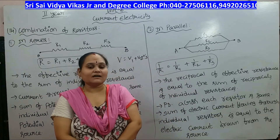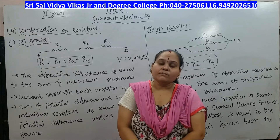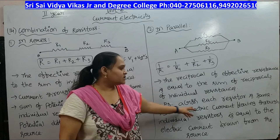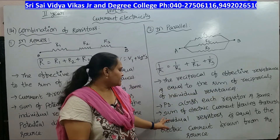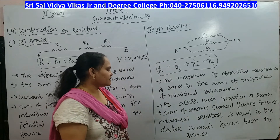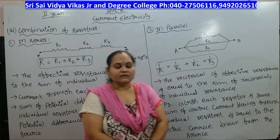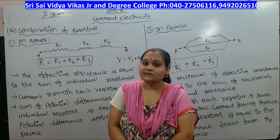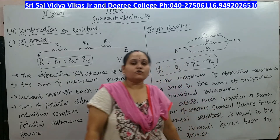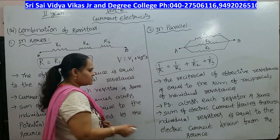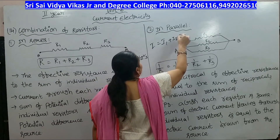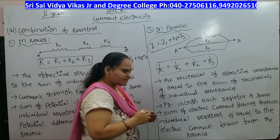In series combination the current is the same in each resistor, but in parallel combination the potential difference across each resistor is the same. The sum of the electric currents flowing through the individual resistors equals the current drawn from the source: I = I1 + I2 + I3.